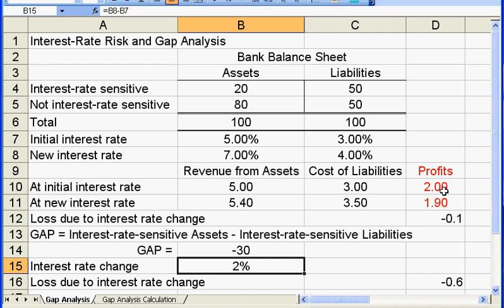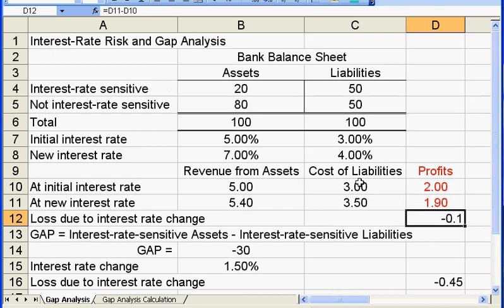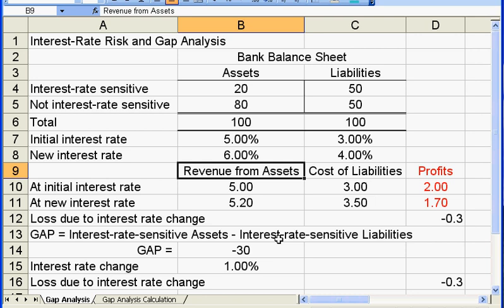But if the average change may be 1.5%, from the gap analysis we still could not get the right number. So if the interest rate change is the same for both assets and liabilities, you can use the gap analysis. But if the interest rate change is different on the two sides,